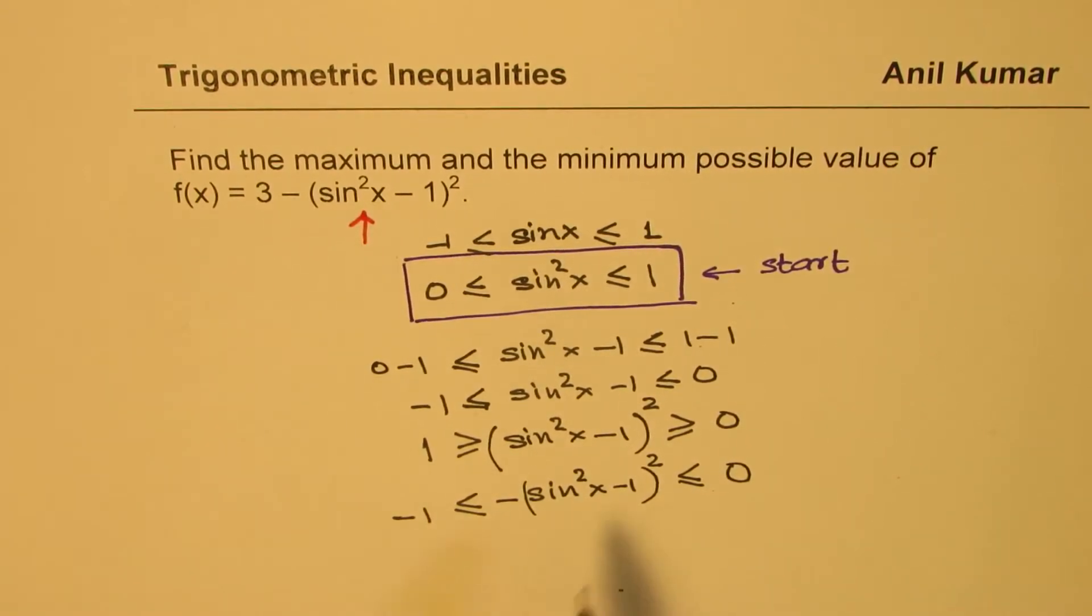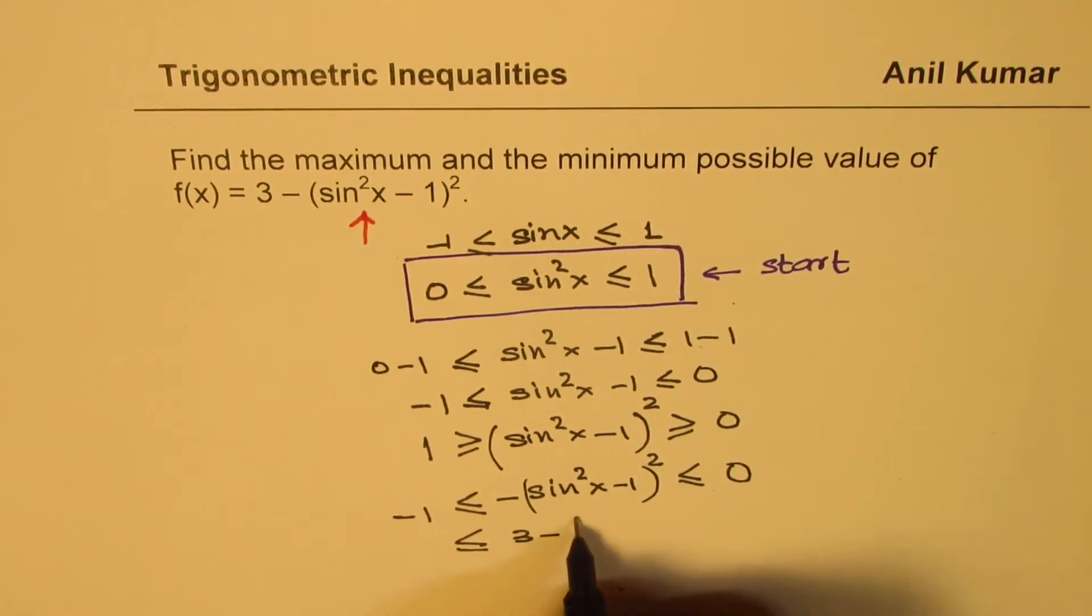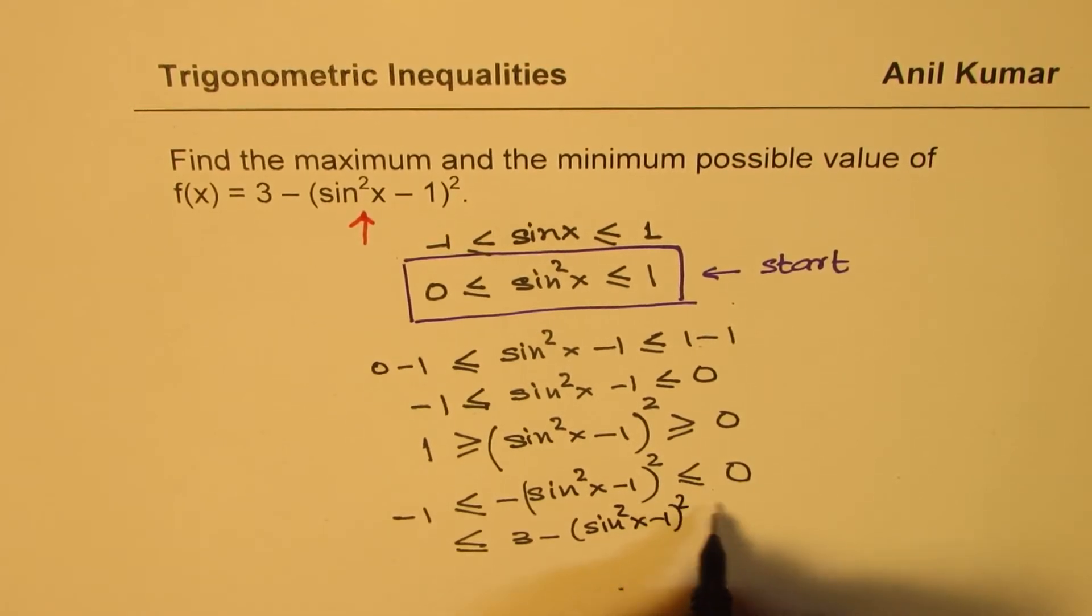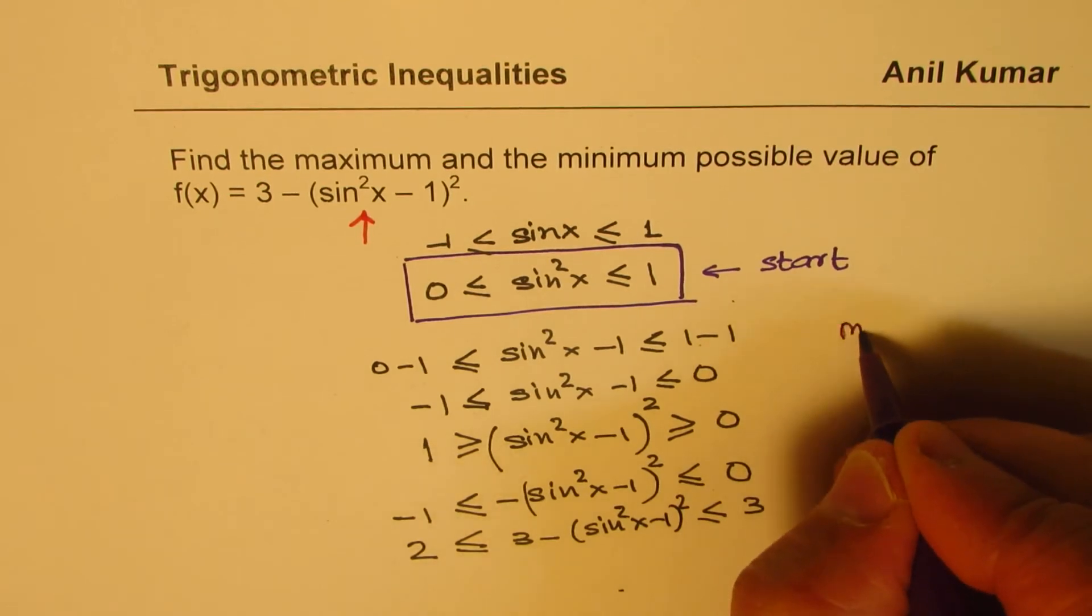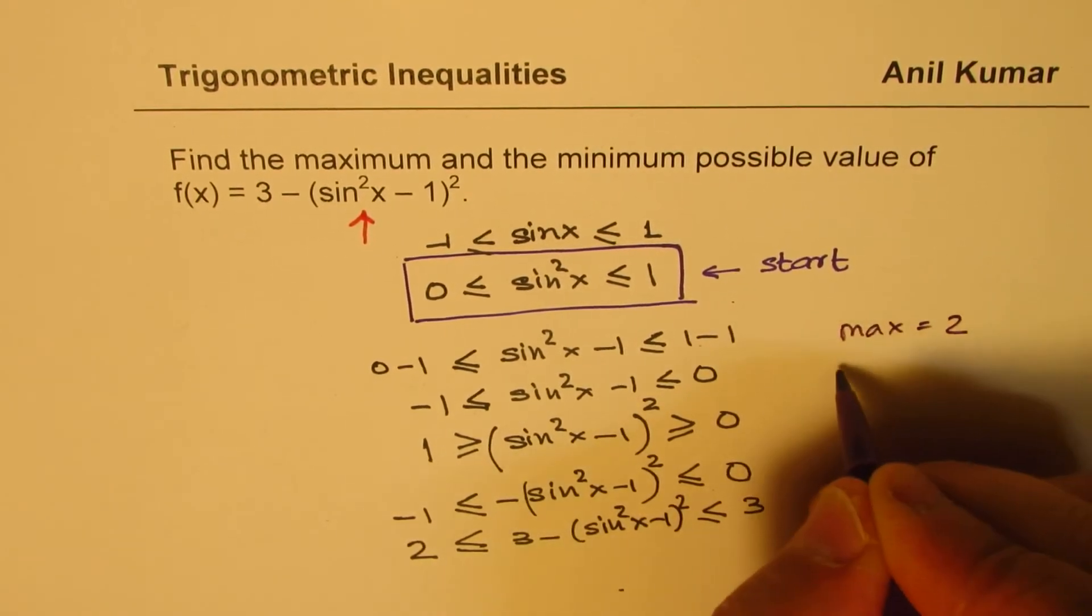And now finally we have to add 3 on each side. So if I add 3, I get 3 minus (sin²x - 1)² is less than equal to 3, and 3 minus 1 is 2. So adding 3 brings us to this.